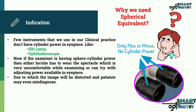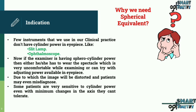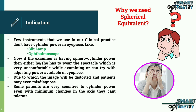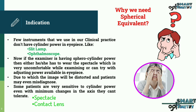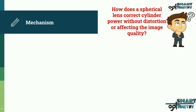In such cases, we can use spherical equivalent to examine the patient by adjusting the spherical lens only. Another example is some patients who are very sensitive to cylinder power — even with minimum changes in the axis they cannot tolerate it. In such patients, we can prescribe the sphero-cylinder power in spherical equivalent format for spectacles and contact lenses.